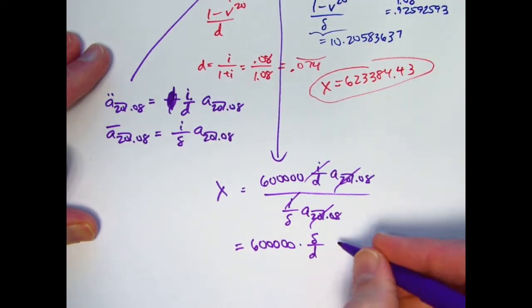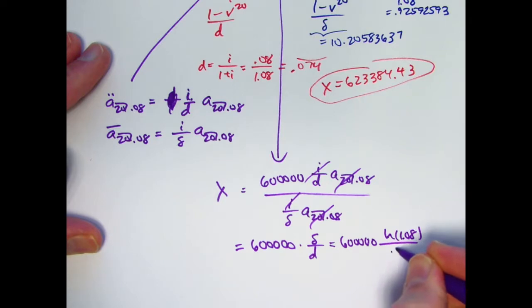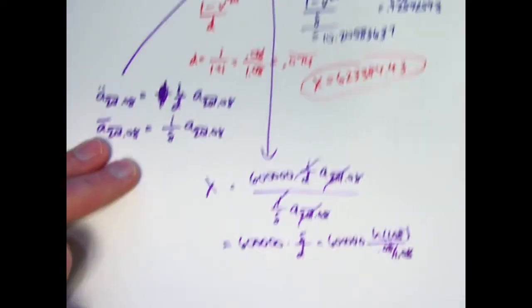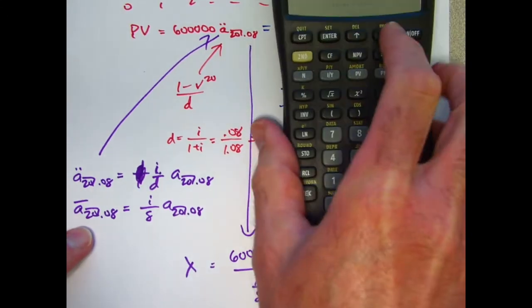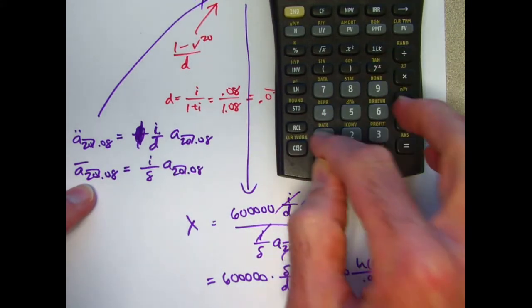So that's 600,000 times the natural log of 1.08 divided by the ratio of 0.08 over 1.08. Delta was in register 0. d, did I say that? No, I didn't say d in any register. That's okay. Let's go ahead and do 0.08 divided by 1.08. This is the 0.074 repeating right there.